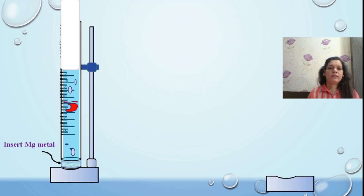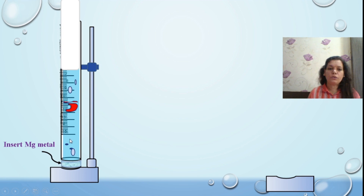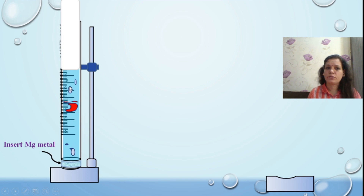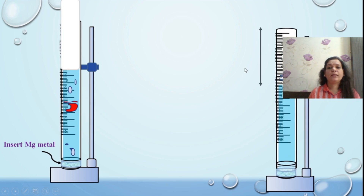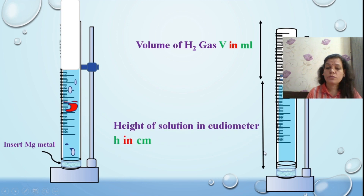This animation clearly shows how the metal reacts with the acid and how the reaction proceeds. The metal piece shown is exaggerated in size; the actual piece is very small — you roll it well and insert it inside the eudiometer. As soon as the metal is inserted, it reacts and the hydrogen gas released creates an empty space inside the eudiometer. That empty space represents the volume of released H₂ gas measured in ml. The height h (in cm) is measured from the water level in the porcelain dish up to the water level inside the eudiometer.